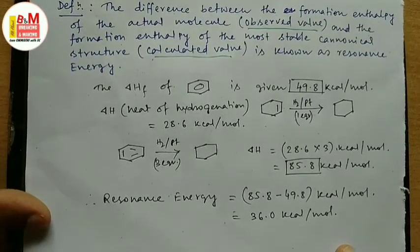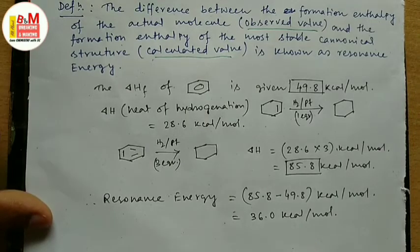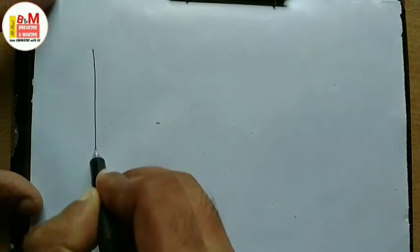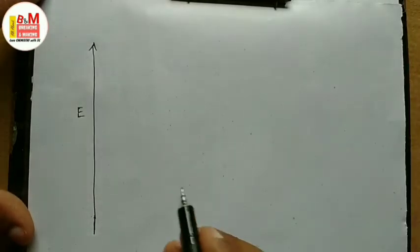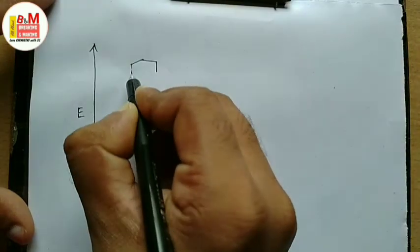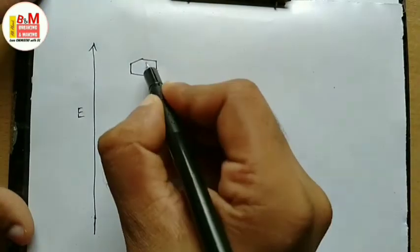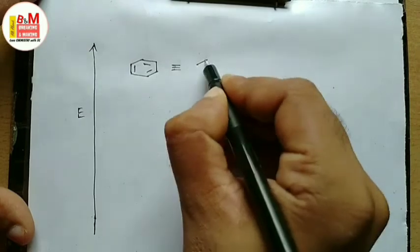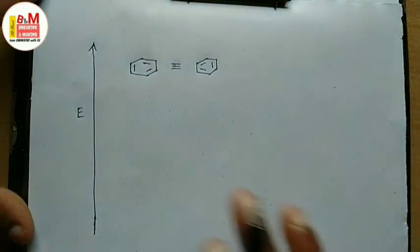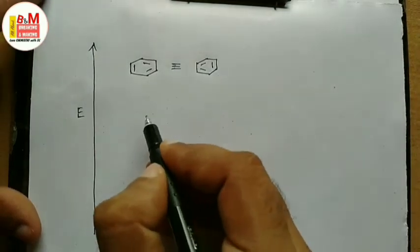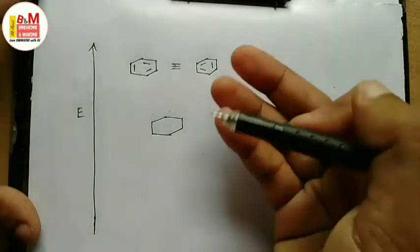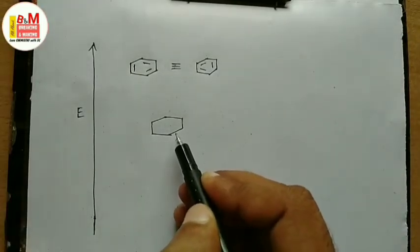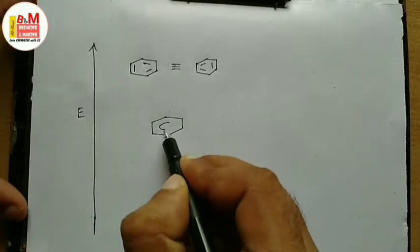Now let us represent this calculation with a diagram. On the vertical energy scale, the Kekulé benzene structures — which are the canonical forms — are placed at the top. Both structures are identical and therefore energetically the same. The actual molecule, which is the resonance hybrid, is placed below them, as the resonance hybrid is energetically more stable than the canonical structures.